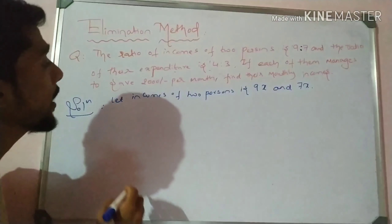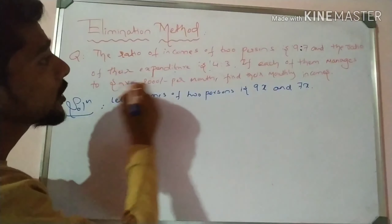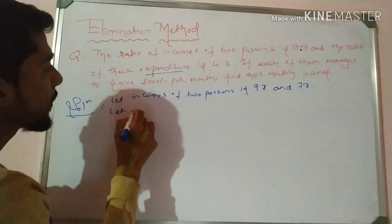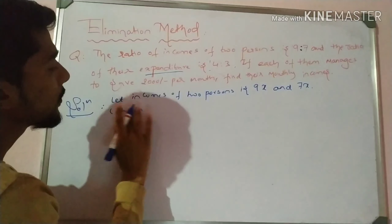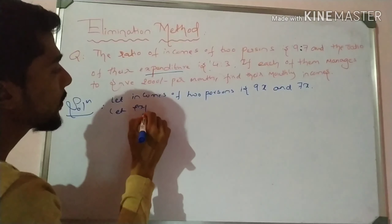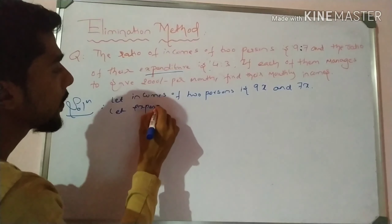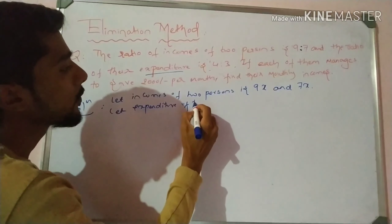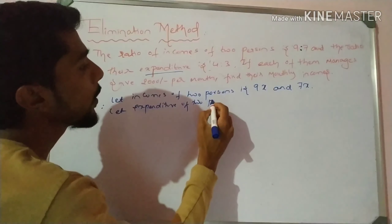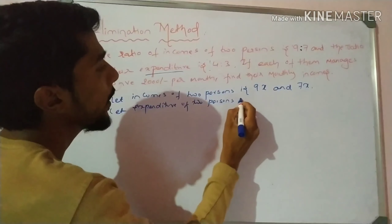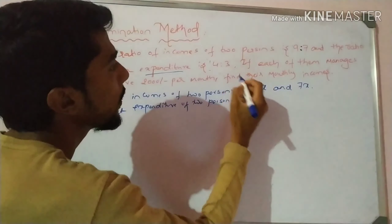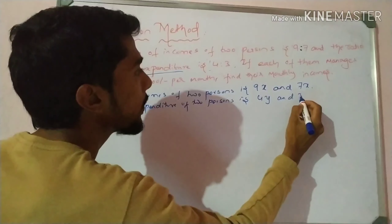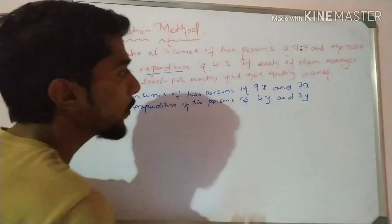This is a story problem and here no linear equations are given directly. So we have to frame the equations using this data. By using these two pieces of data, we are able to find the equations first. After finding the equations, we try to solve by using the elimination method.